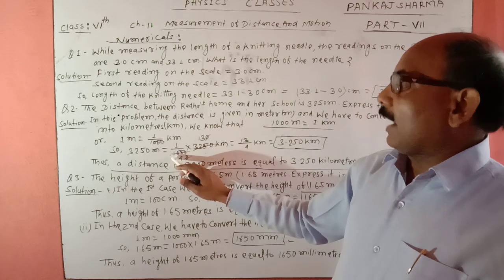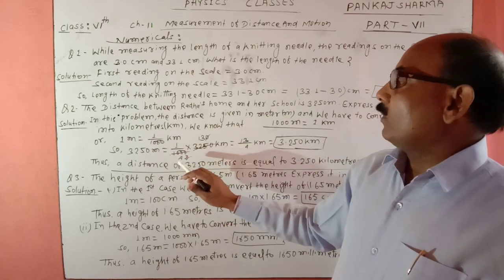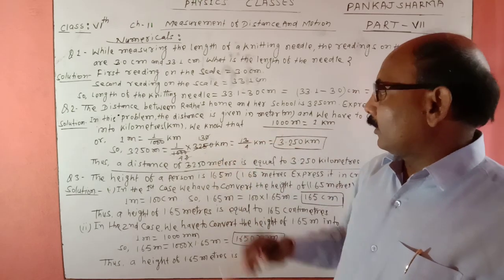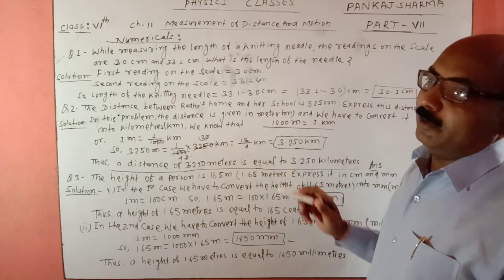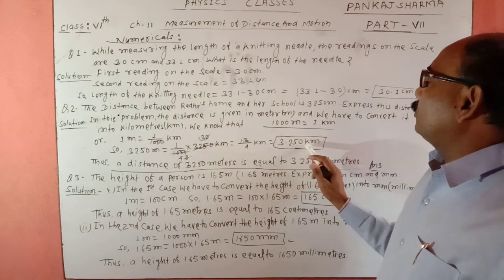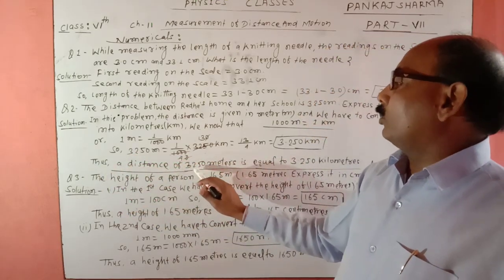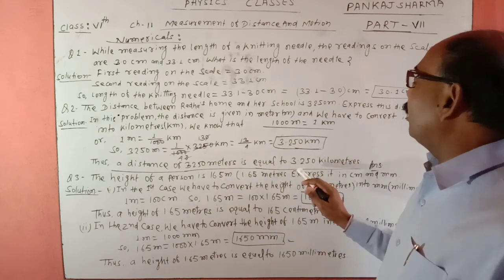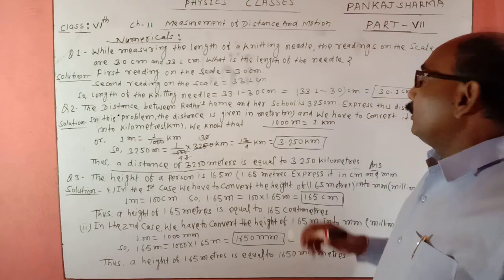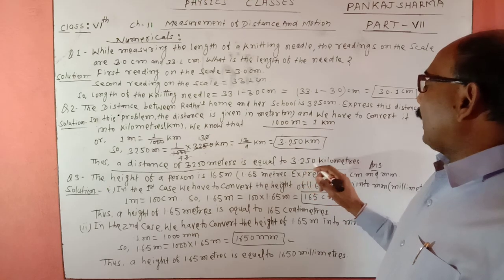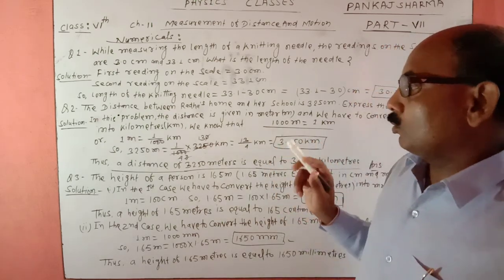25 से divide करेंगे। 130 आएगा, और 25 से divide करेंगे तो 40 आएगा। 0 से 0 को cancel करते हैं, हमारा आया 13/4 kilometer। 4 से 13 में divide करेंगे तो 3.250 kilometer आएगा। The distance of 3,250 meter is equal to 3.25 kilometer। यही हमें पूछा जा रहा था, तो यह problem का solution हो गया।